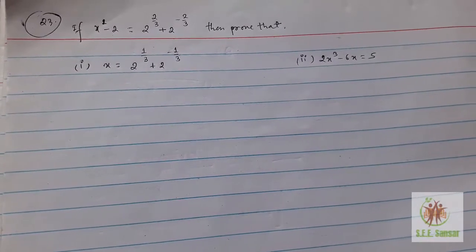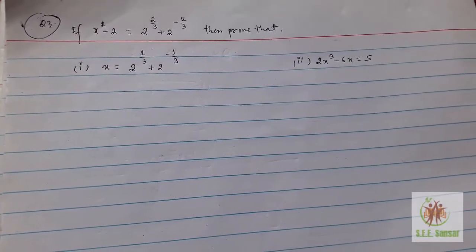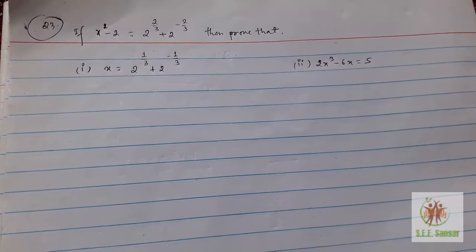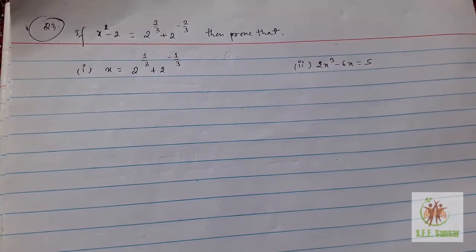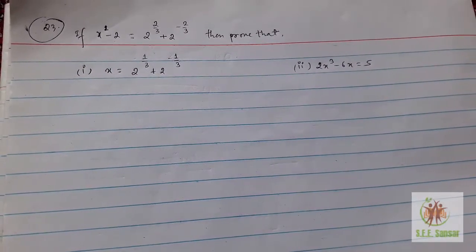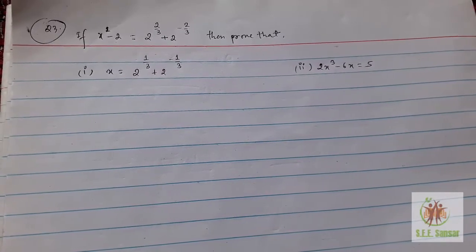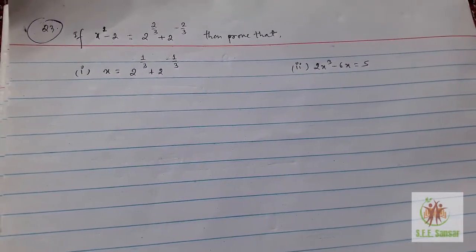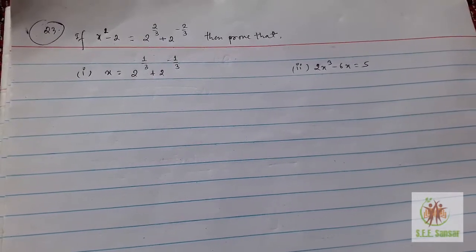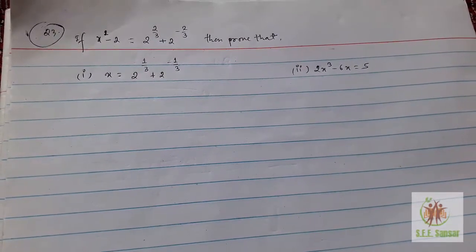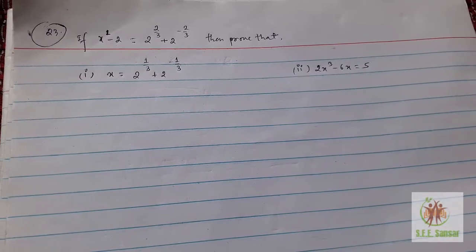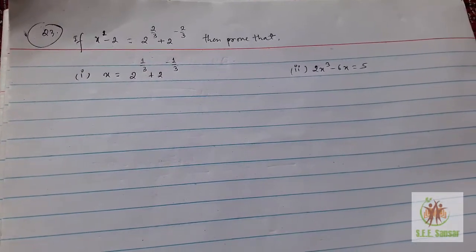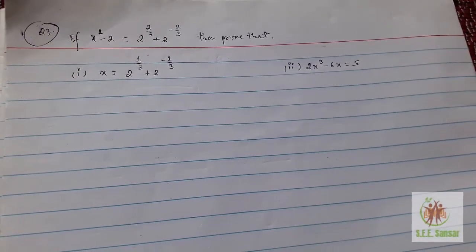Somebody gave me this problem and it is from model question set 2 according to your 2074 syllabus, question 23. So the question is x² minus 2 equal to this square.